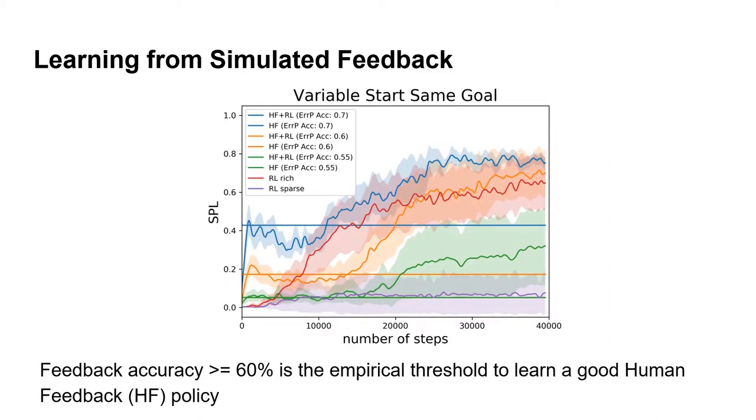We simulate human feedback at various detection rates to analyze the robustness of our method to different levels of feedback accuracy. We find that feedback accuracy greater than or equal to 60% is required to learn a good HF policy, while 55% accuracy shown in green is unable to learn good performance.